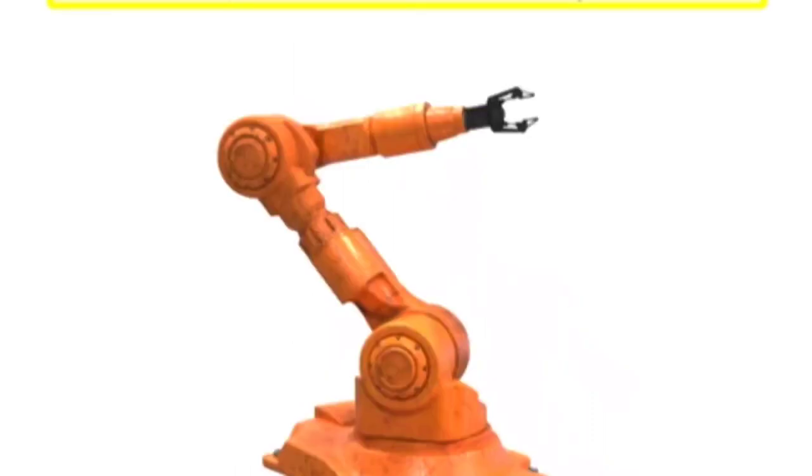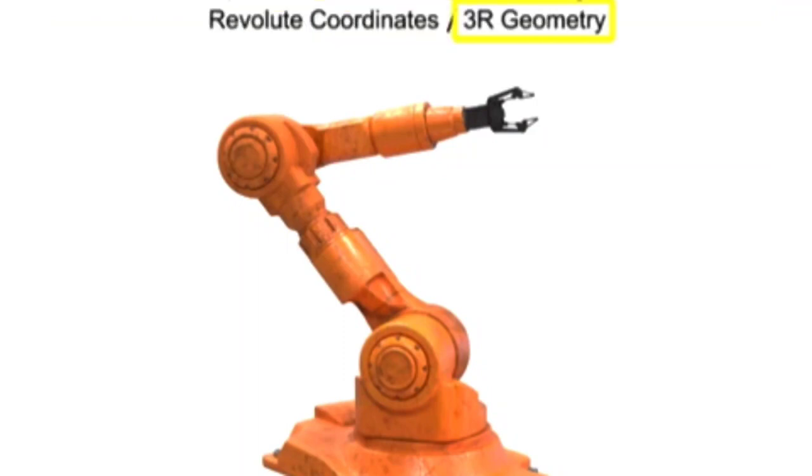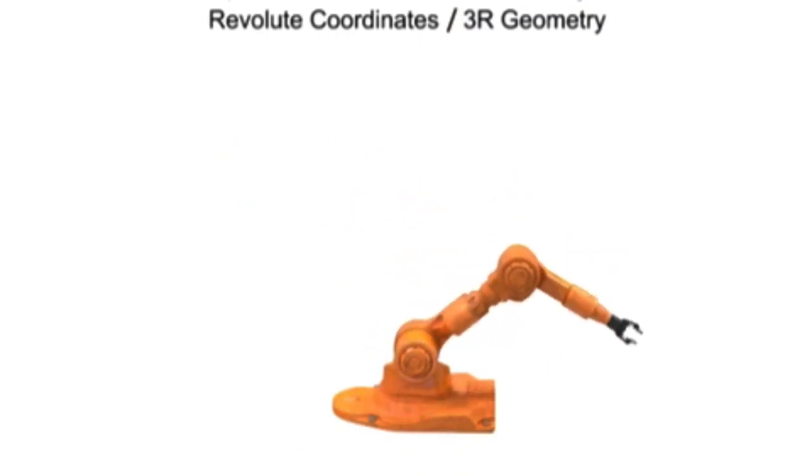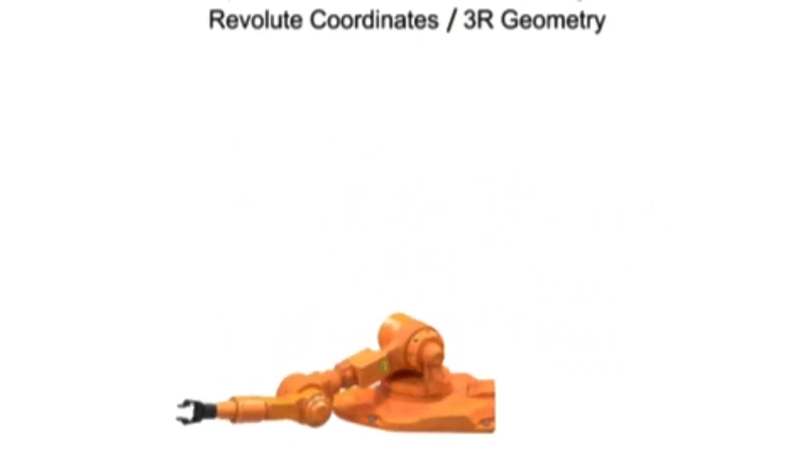Spherical arm geometry robots have rotation in three directions, use revolute coordinates, and are given the designation of 3R. They are one of the most popular types of robotic arms and most accurately mimic the movement of the human arm.